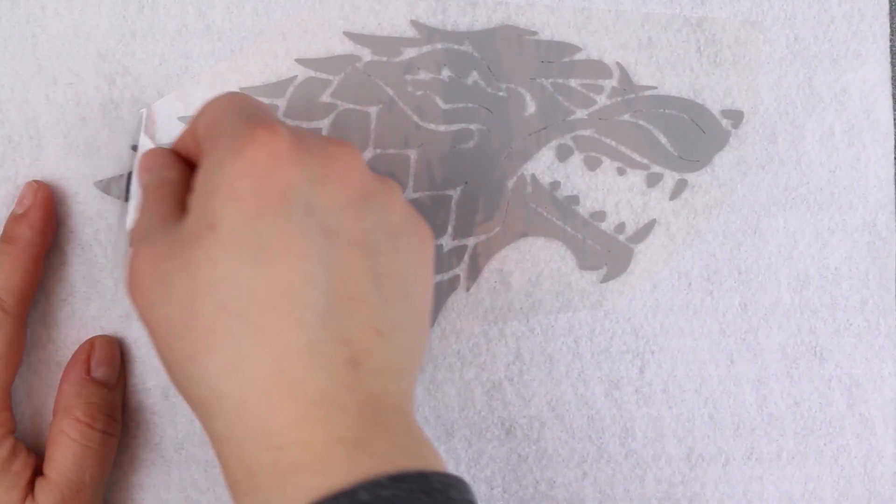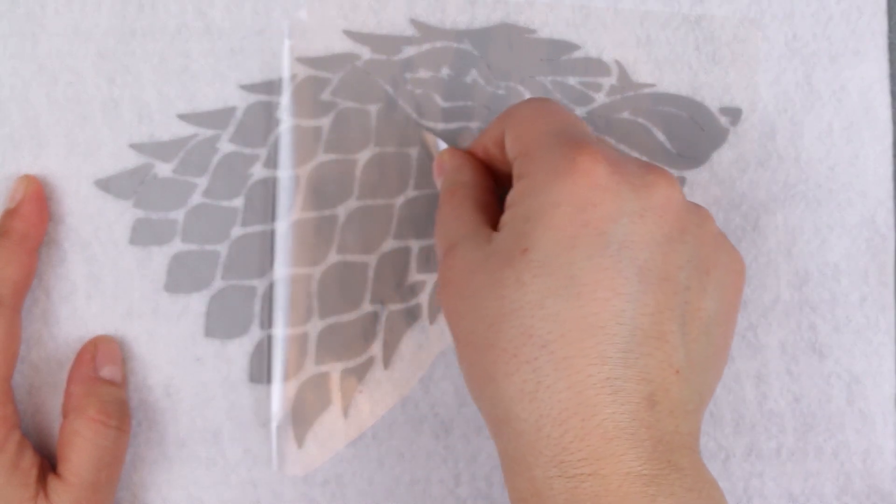Slowly peel off the plastic backing from your iron-on vinyl to reveal your finished design.